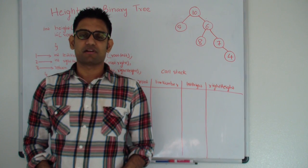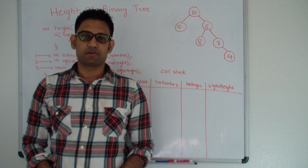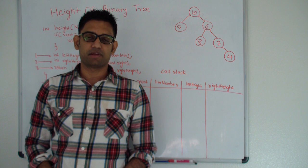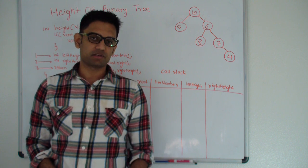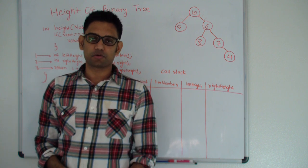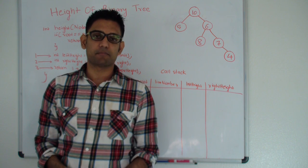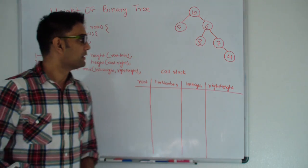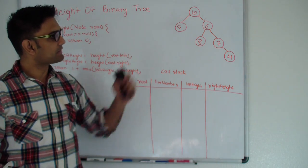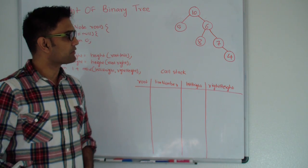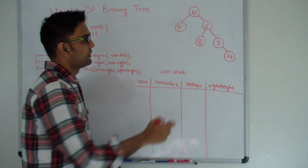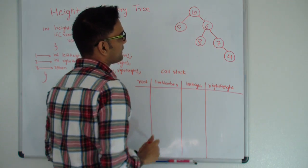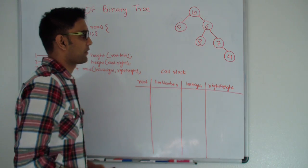Hello friends, my name is Tushar and today I'm going to discuss the question: height of a binary tree. The question is: given a root of a binary tree, you have to return the maximum height of this binary tree. For this example, you should return 4 because this particular path from root to leaf is of size 4.